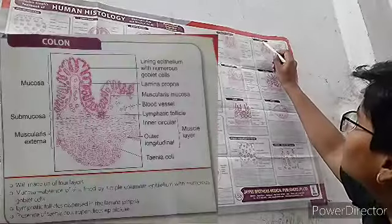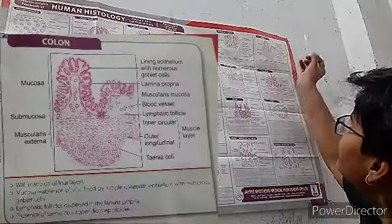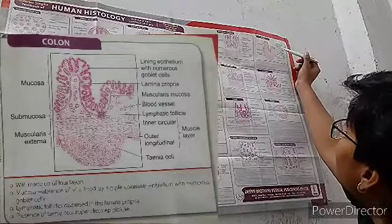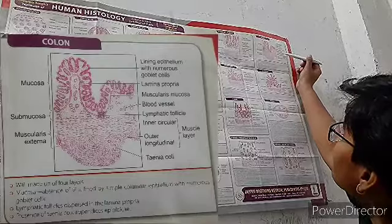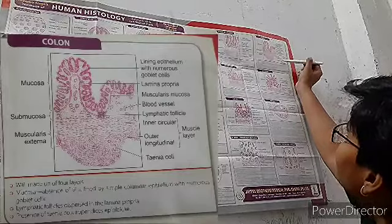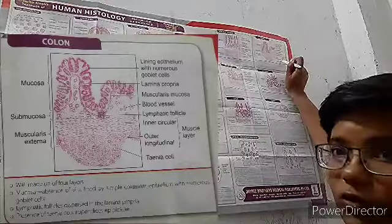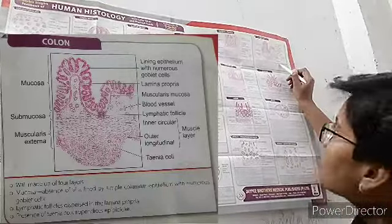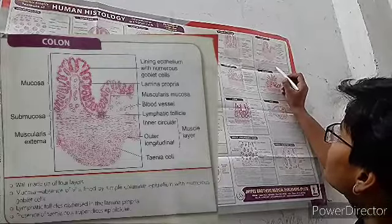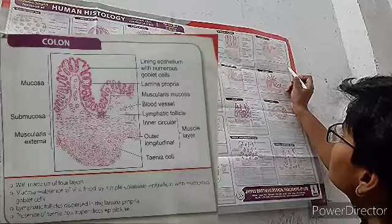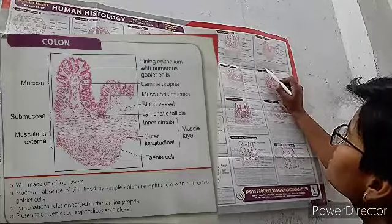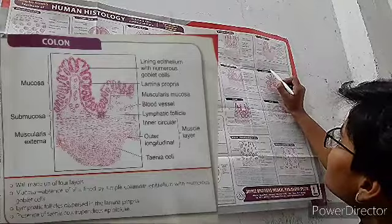Now the colon. Visible structures include mucosa, submucosa, muscularis externa, lining epithelium with numerous goblet cells, lamina propria, muscularis mucosae, blood vessels, lymphatic follicles, inner circular and outer longitudinal muscle layers, and taenia coli. The wall is made up of four layers. The mucosa shows absence of villi, lined by simple columnar epithelium with numerous goblet cells. Lymphatic follicles are dispersed in the lamina propria. The presence of taenia coli is a distinguishing feature of the colon.